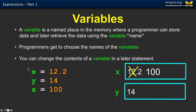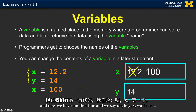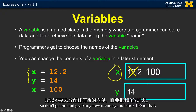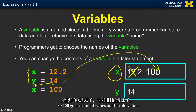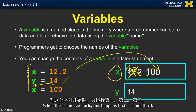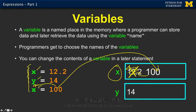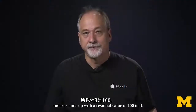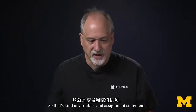If we keep going in this code and we say x again — wait, I already told you about x, x already exists — so don't grab any new memory, just stick 100 in that, wiping out the old value. That's what happens. This sequence runs first, second, third, and so x ends up with a residual value of 100 in it. That's variables and assignment statements.